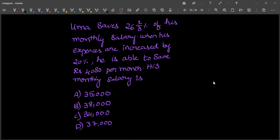So today's question is this and the answer for this question is 34,000. If you tried this and you got the correct answer, my congratulations for you. So let us solve this. See, Uma is saving 26 2/3 percent of the salary.